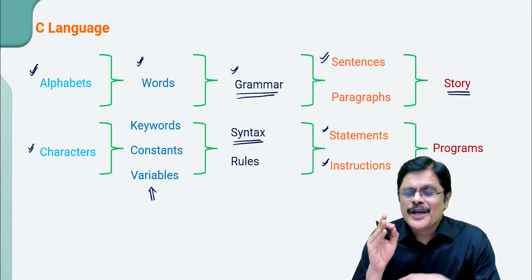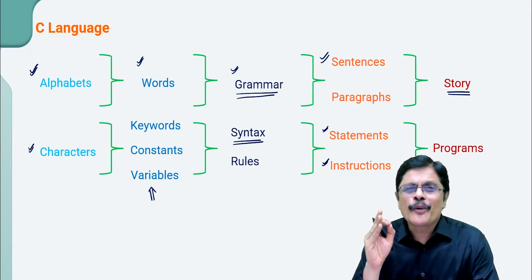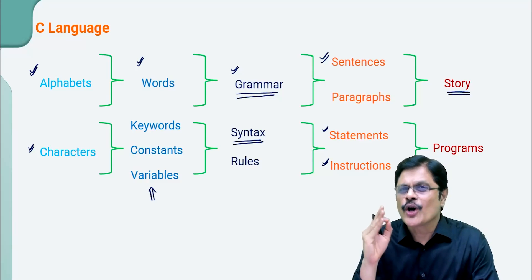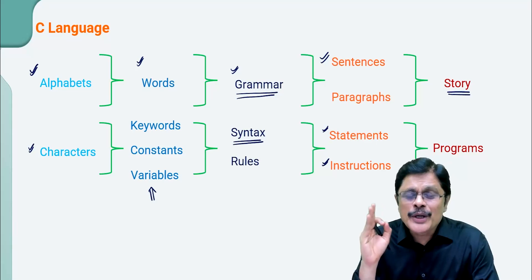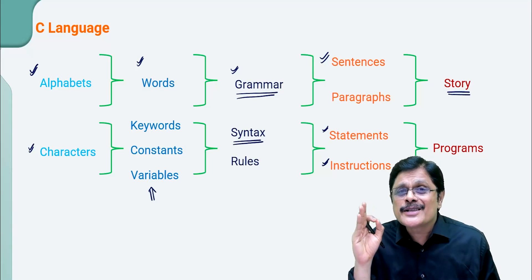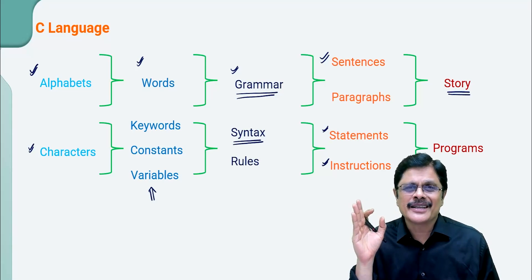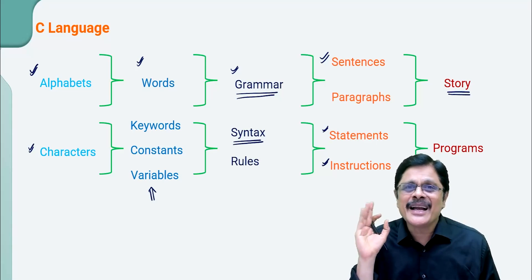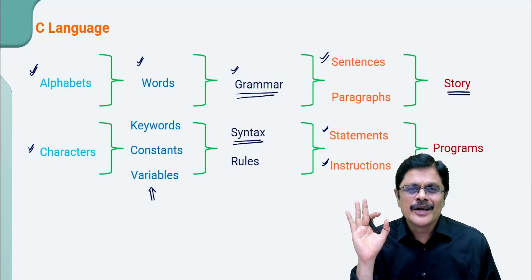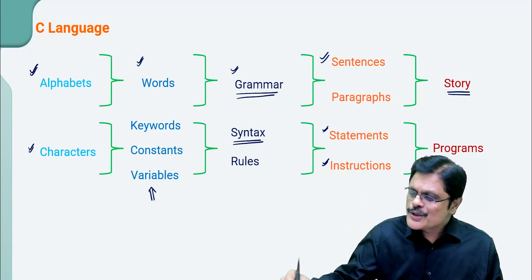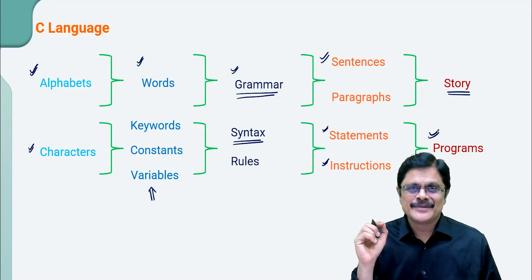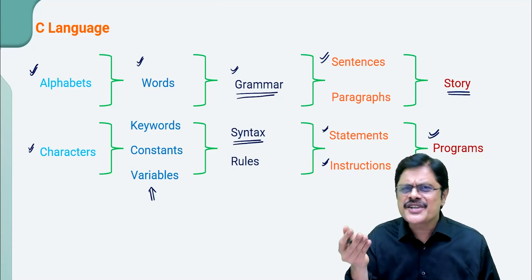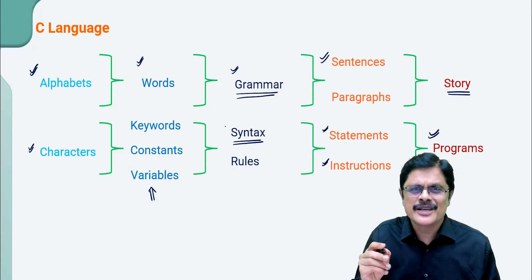But if you want to write a program for solving a problem, you need to know a logical solution for that — that is semantics. Writing a program requires skill, while writing instructions requires syntax rules. But if you just know syntax rules, you cannot write a C program. For writing a C program, you should know how to solve the problem.